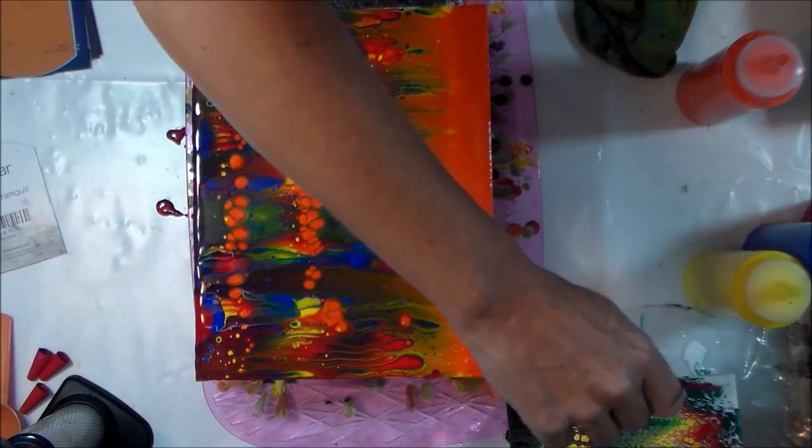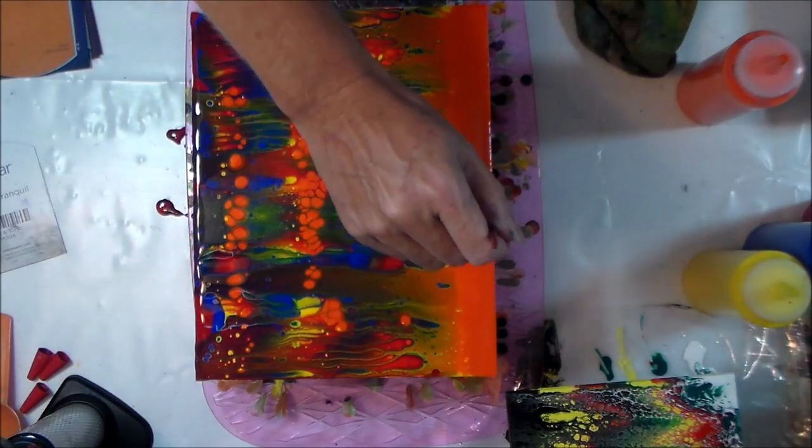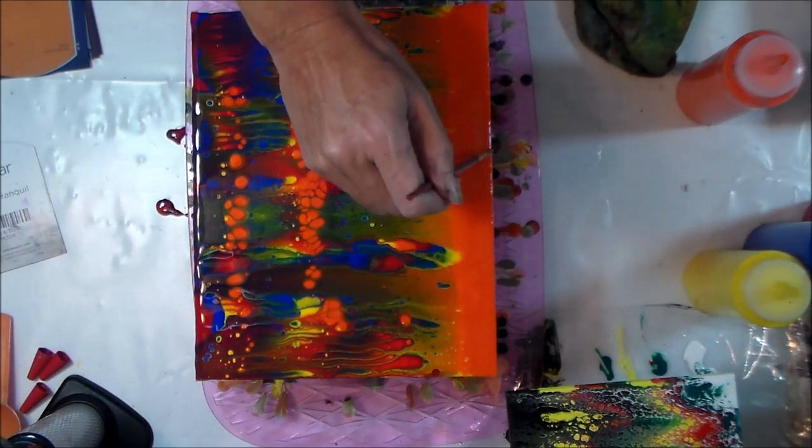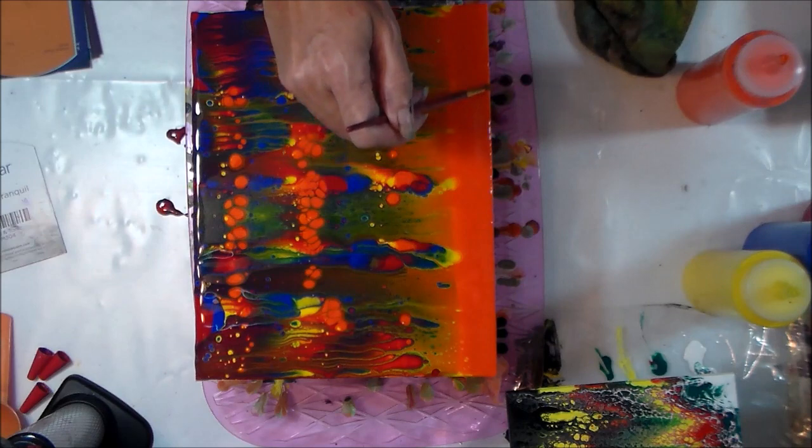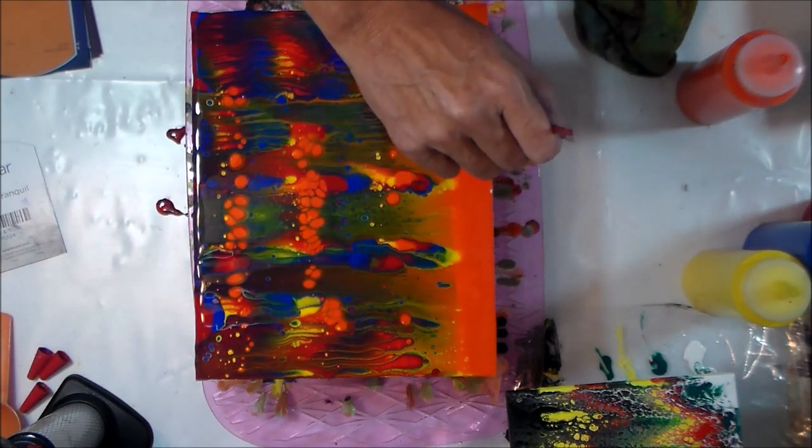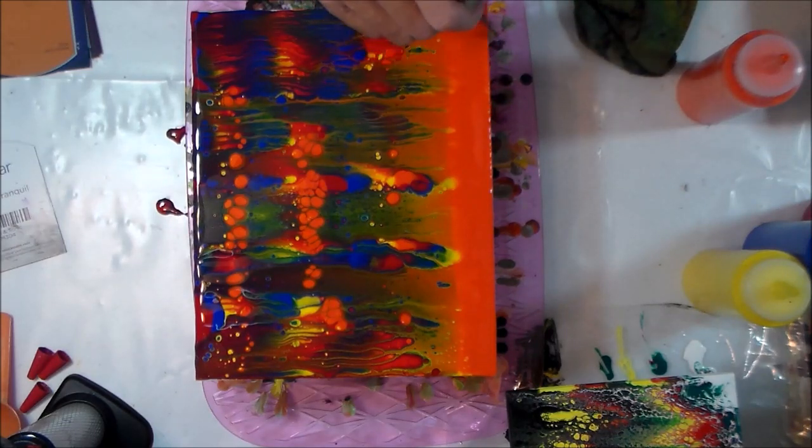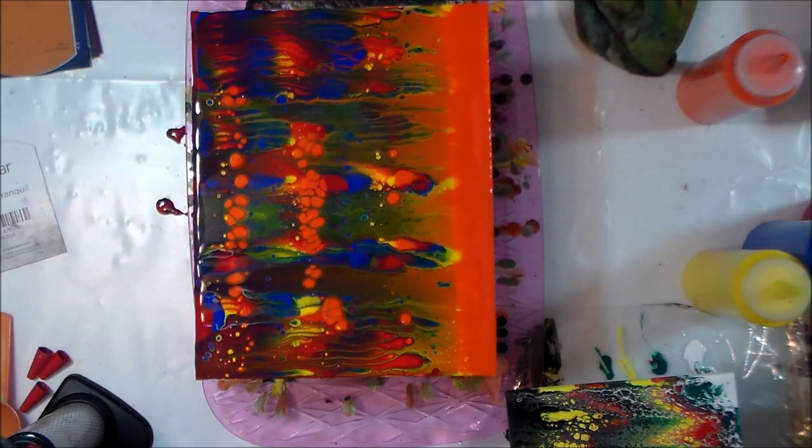As they dry it contracts because they don't dry evenly. The outsides dry before the center and it all causes the boards to warp. I've just touched up that edge with the orange. I may need to come back and do the corners again when it's dry.